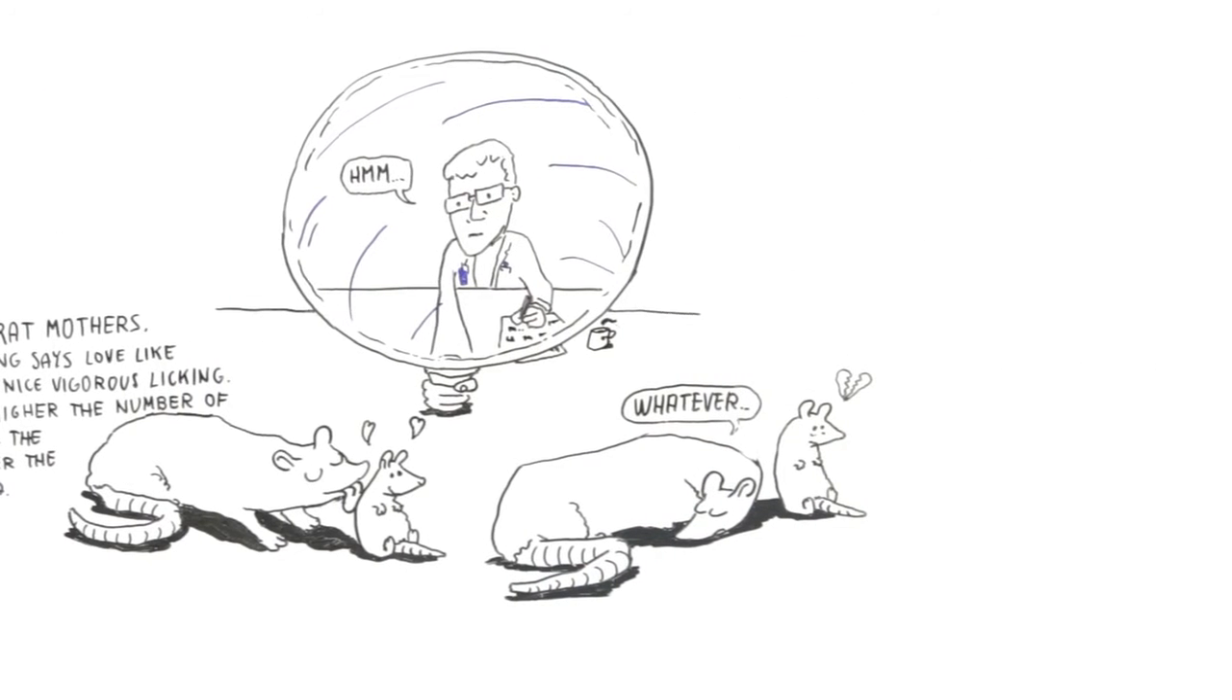With this in mind, the researchers compared two groups of rat mothers. One that licked their babies a lot and another that didn't. But they found that when babies grew up, they carried their mama's behavior with them. And passed it on to the next generation, and the next one, and so on.